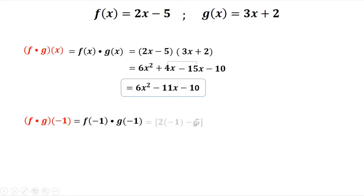So from f of x, we have 2 times negative 1 minus 5, then times g of x, 3 times negative 1 plus 2. Then you simplify, you need to solve first what is inside the parenthesis. So this is 2 times negative 1, that's negative 2 minus 5. And the other one, 3 times negative 1, so negative 3 plus 2.